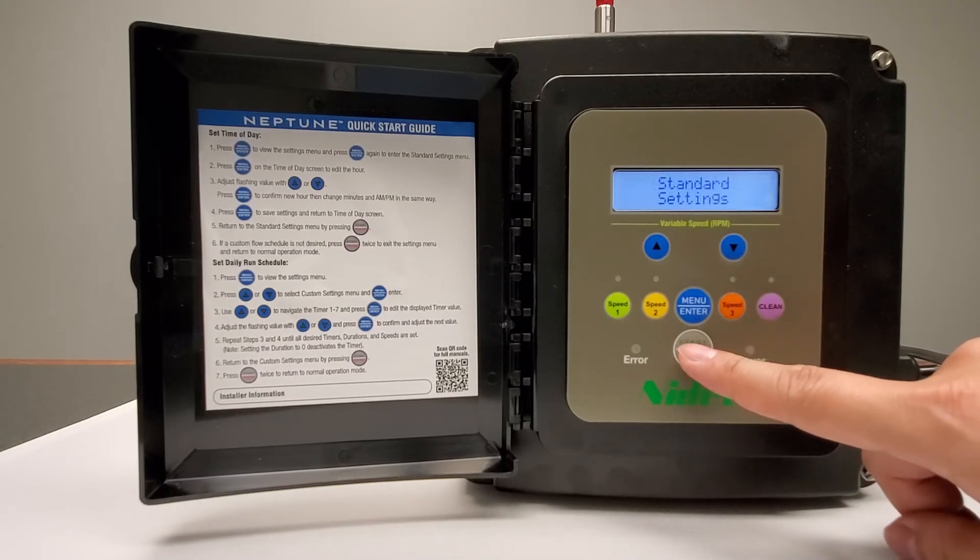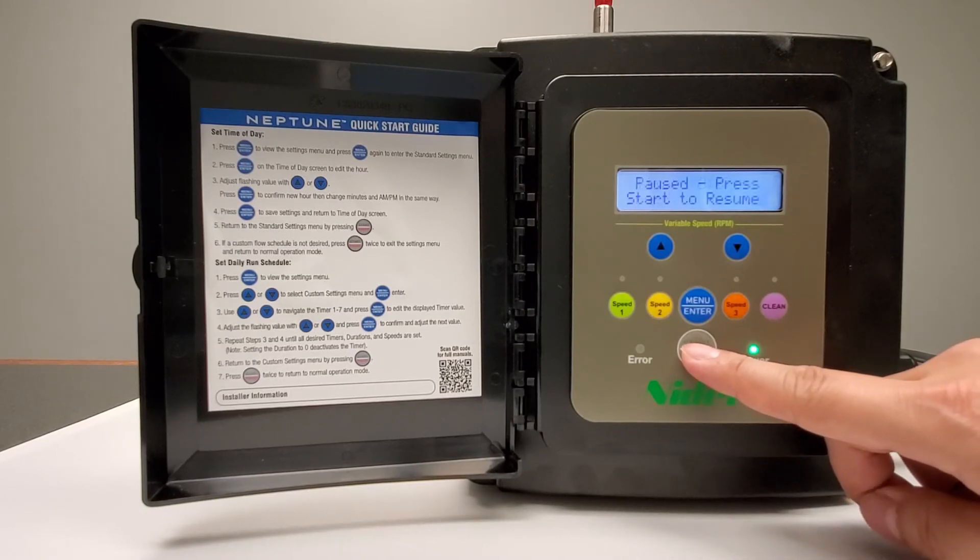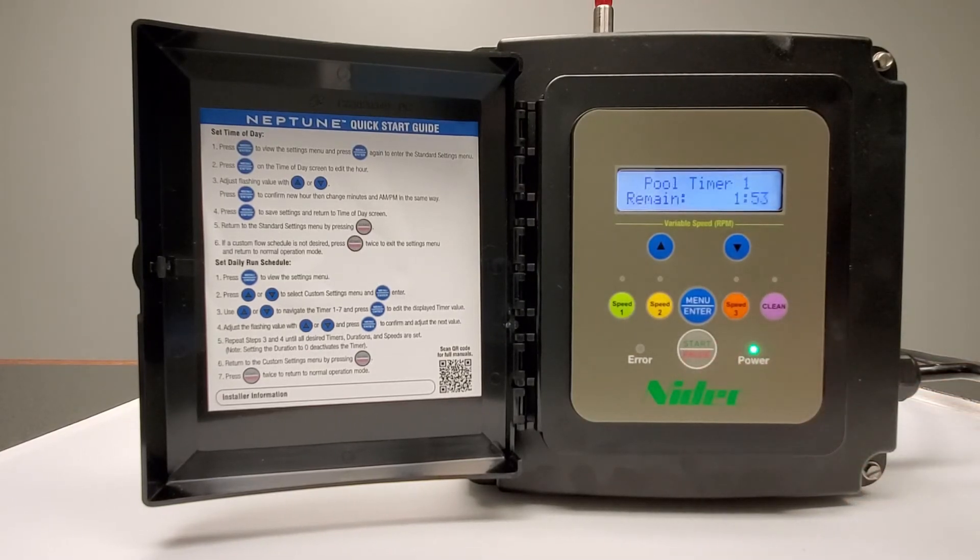The time is now set on the Neptune motor. Press the start/stop button twice to exit the standard setting menu. This will bring you to the motor's operation menu. Press the start menu one more time to begin running the motor.